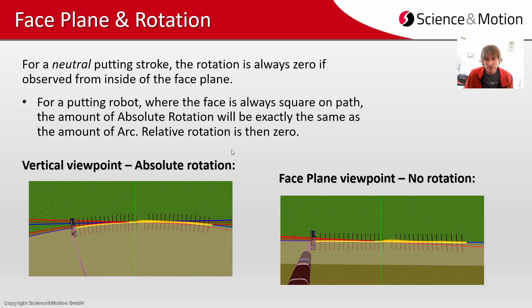Now for a putting robot where the face is coupled to the path so that it's always square, then the amount of absolute rotation will be exactly the same as the amount of arc against the target line. Still relative rotation can be zero.